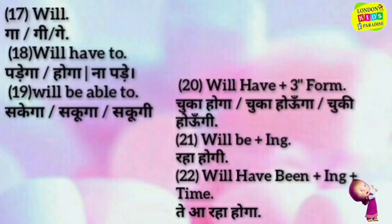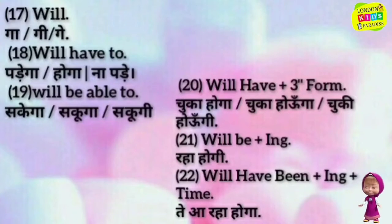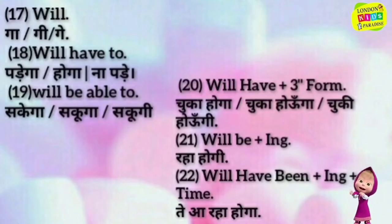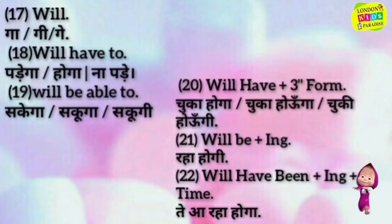Will have plus third form — chuka hoga, chuka hoon ga, chuki hoongi. Will be plus '-ing' — raha hoogi. Will have been plus '-ing' plus time — teh hai hai hai.